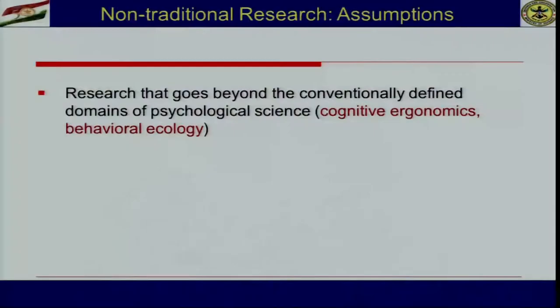Likewise, we can try to understand cognitive ergonomics as a science. Ergonomics is generally practiced in engineering sciences, but the cognitive component is actually a fine admixture of psychological science and ergonomical science — what we sometimes call human factor research or human engineering. We can also study behavioral ecology — how ecology impacts behavior or how behavior is influenced by ecology — through non-traditional research.